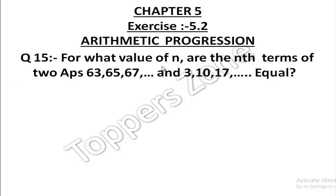For what value of n are the nth terms of two APs — 63, 65, 67 and 3, 10, 17 — equal?